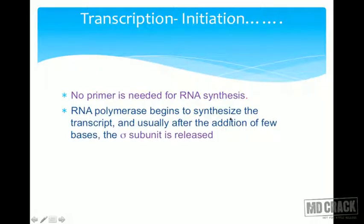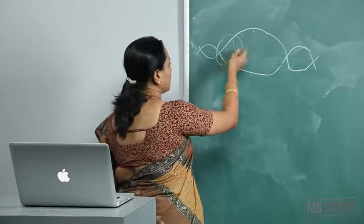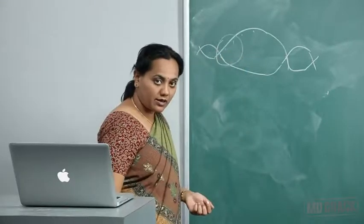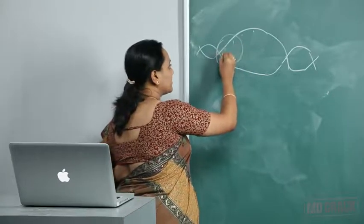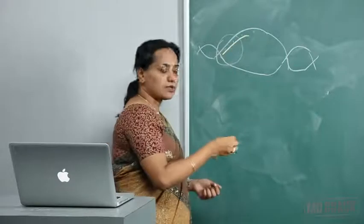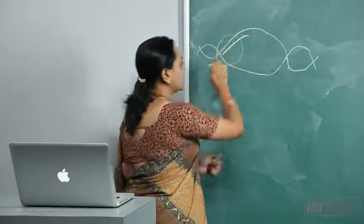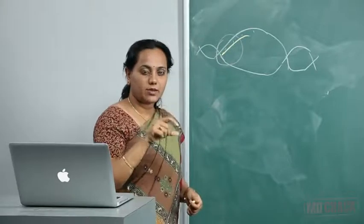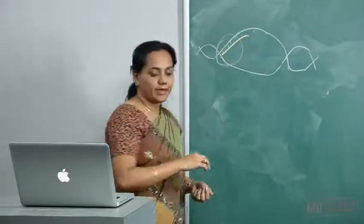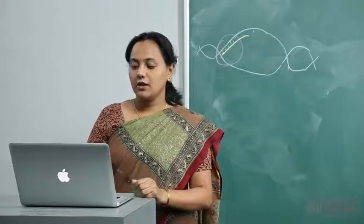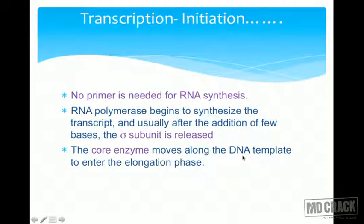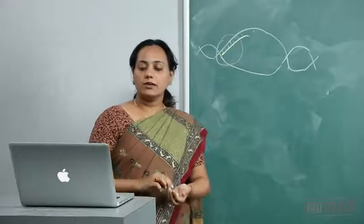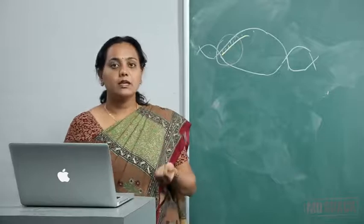No primer is needed for RNA synthesis. The RNA polymerase begins to synthesize the transcript, and usually after the addition of a few bases, the sigma subunit is released. The RNA polymerase keeps on synthesizing a new transcript while moving along the DNA. Once a few bases have been added complementary to the DNA template, the sigma subunit is released and the core enzyme moves along the DNA template, leading into the elongation phase.